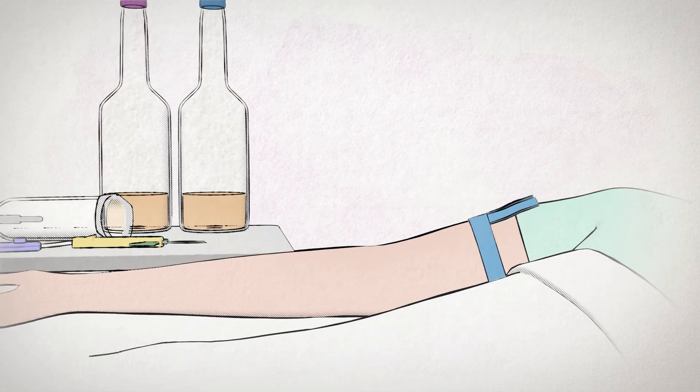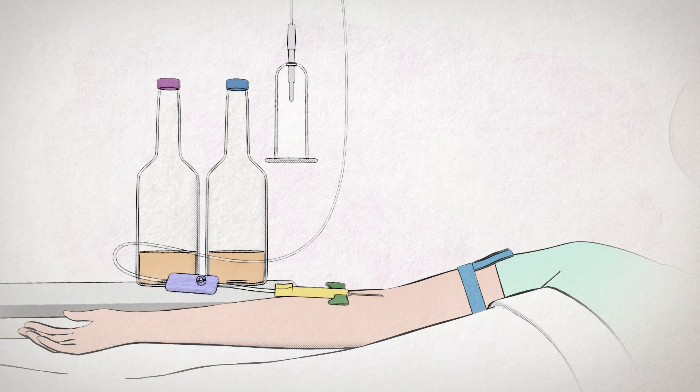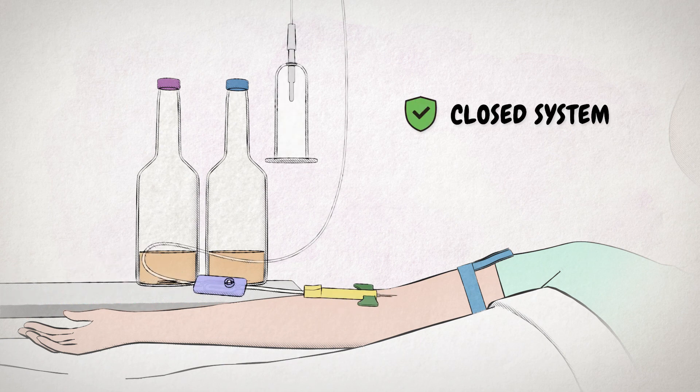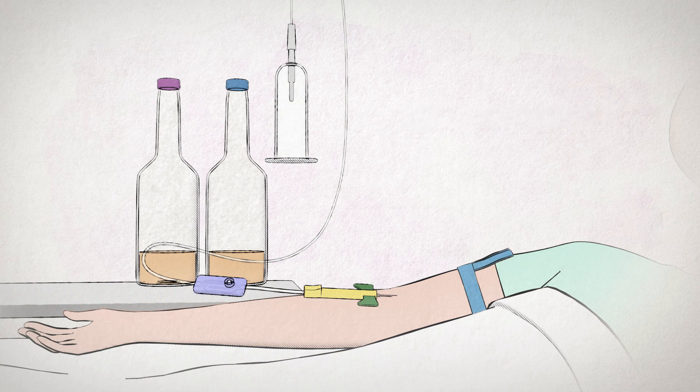Then, perform the venipuncture using a closed system butterfly collection set with a bottle holder. Some patients have veins that are difficult to access and could collapse under the vacuum pressure of a vacutainer culture bottle.